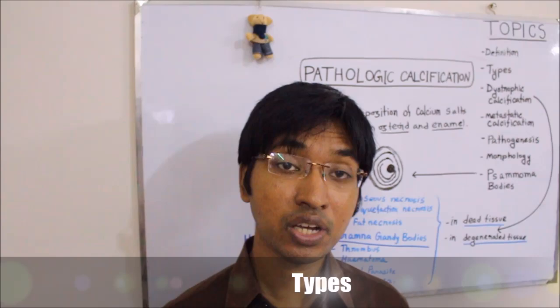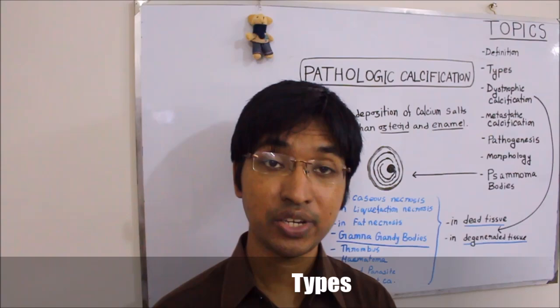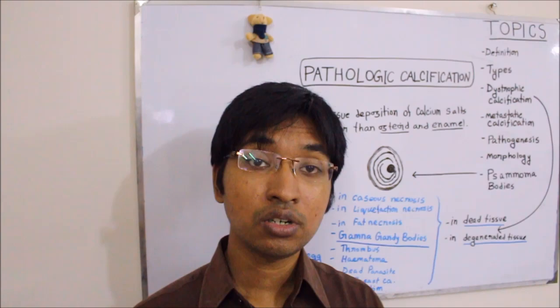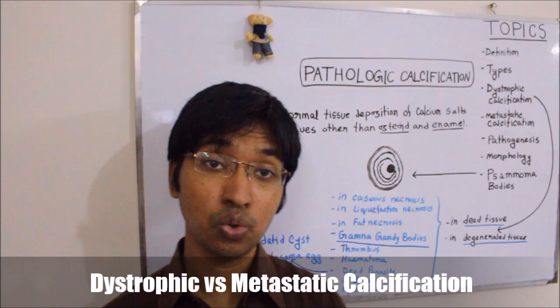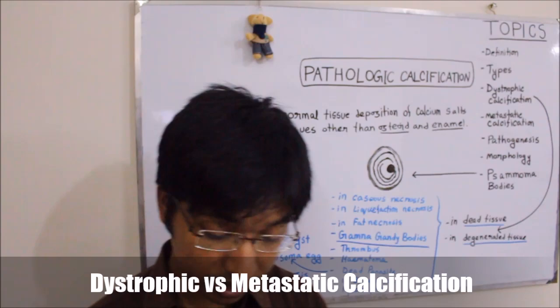Pathologic calcification can be classified into two types: dystrophic calcification and metastatic calcification. You must know the difference between these two types. This is a very high-yield topic and often asked in the exam. The examiner may ask you how you can differentiate between dystrophic and metastatic calcification.